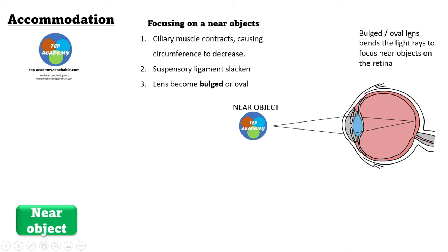the lens will become bulged, oval — or one might say convex. The bulged, oval lens bends the light rays to focus on the retina. The light rays were already being bent by the cornea, but based on the lens becoming more convex, it causes the individual to see near objects better, as you're seeing someone here looking at the TCP academic logo.